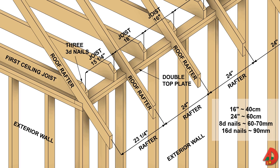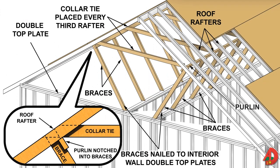Ceiling joists are often wider than roof rafters; therefore, a slope must be cut at each end of ceiling joists using a framing square. One method of strengthening a roof is to install collar ties or collar beams at every second or third pair of rafters. Collar ties should be installed in the upper third area of the attic space and fastened at each end with 8D nails.